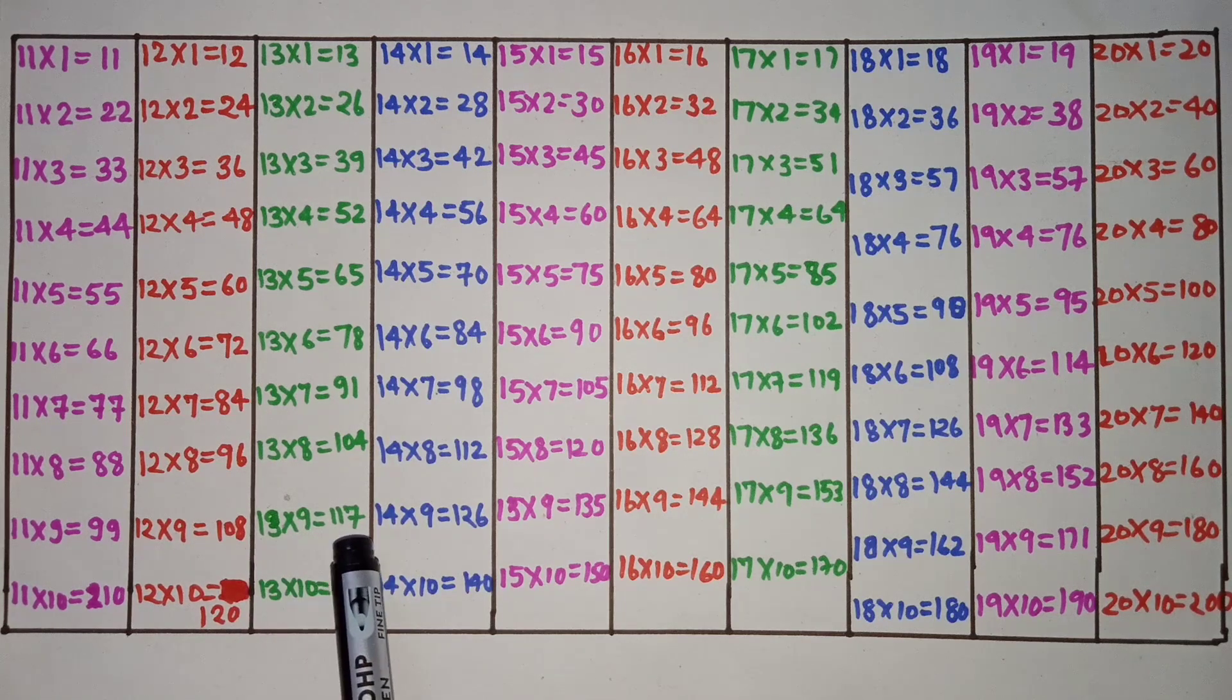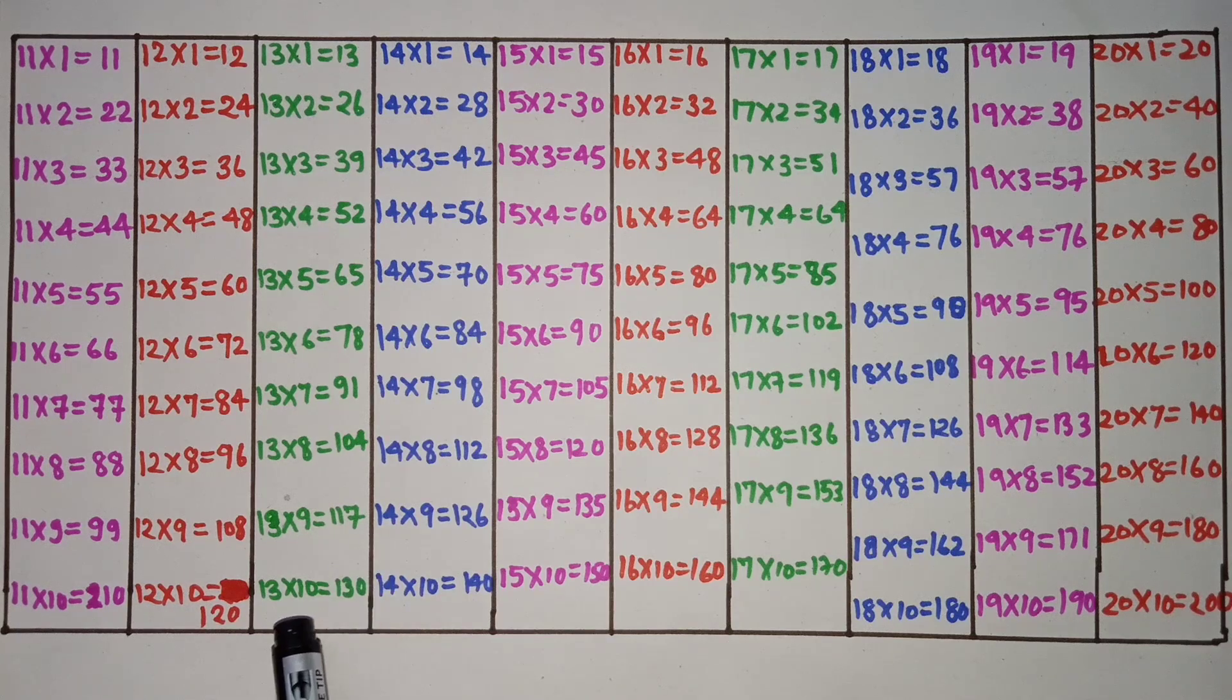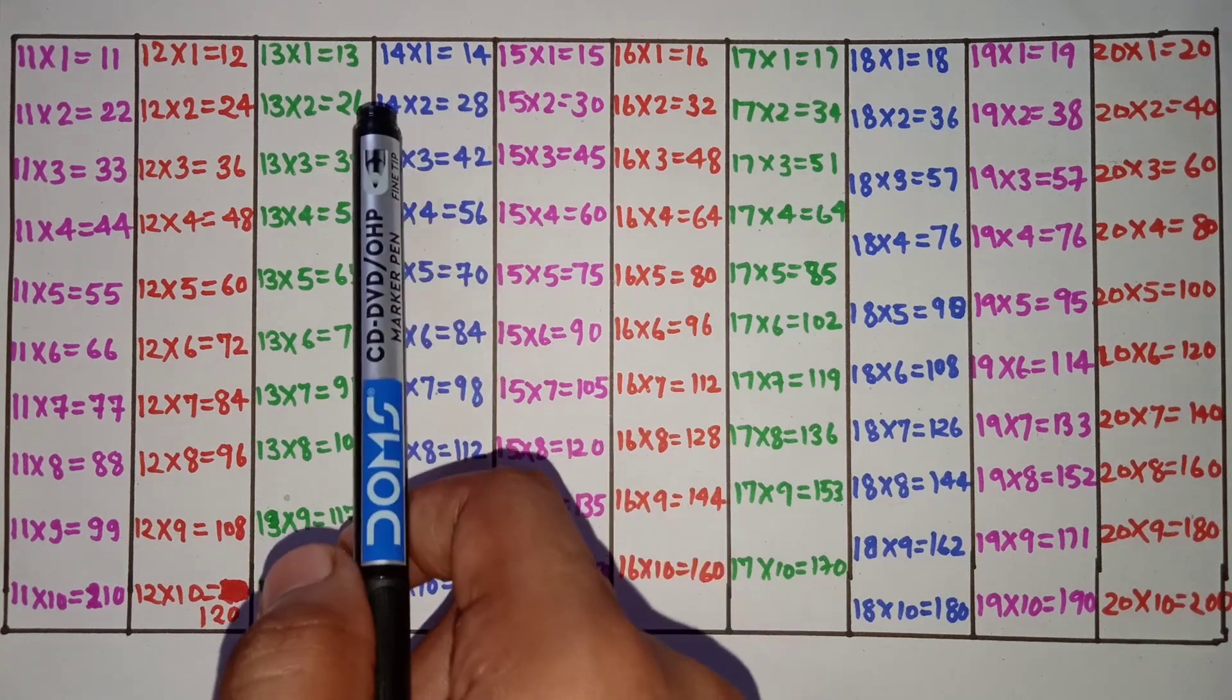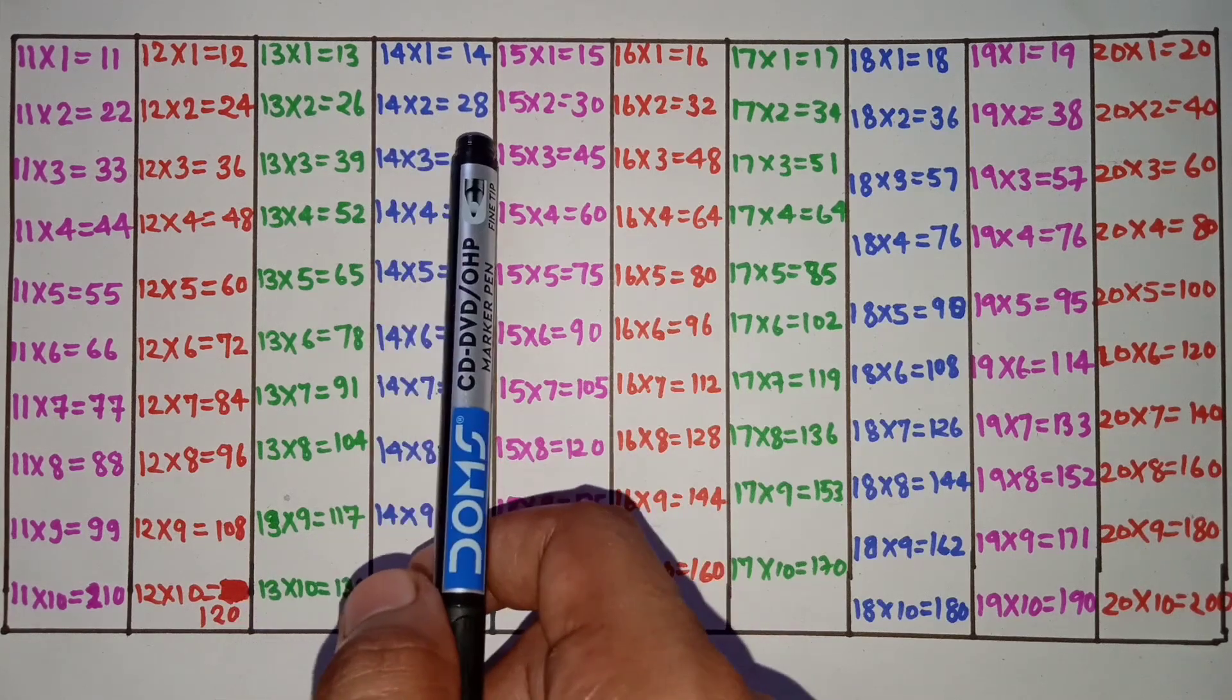13 eights are 104, 13 nines are 117, 13 tens are 130. 14 ones are 14, 14 twos are 28.